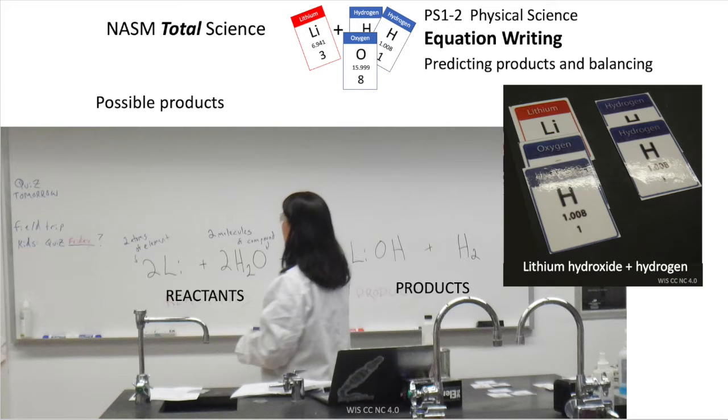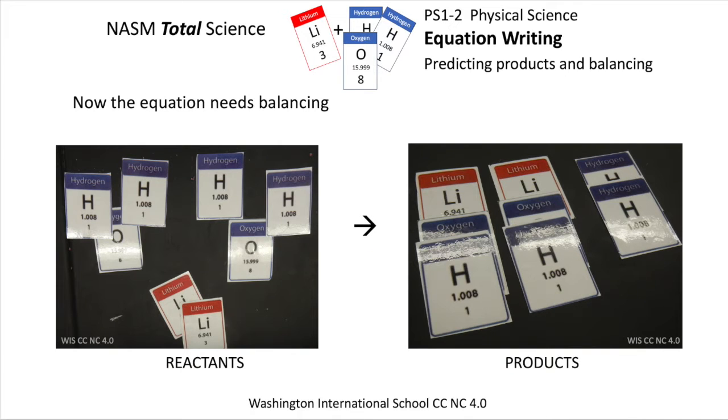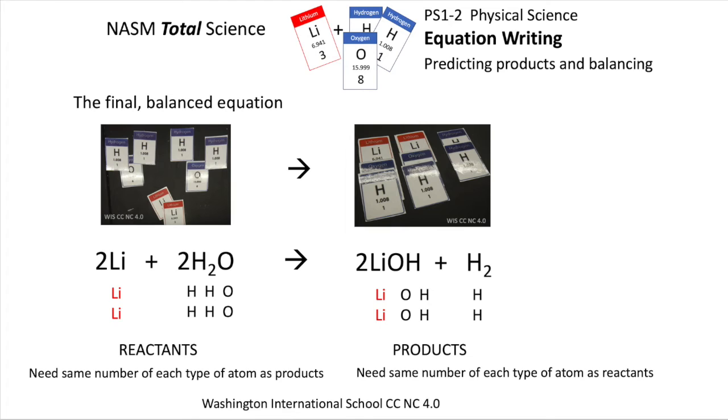That's not a balanced equation just yet. If we look at the reactant atoms and then rearrange them, we see that we need two formula units of lithium hydroxide and one molecule of hydrogen. When we write the equation, it actually helps if you write down the individual atoms.